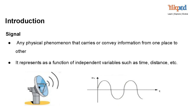A signal is any physical phenomenon that carries or conveys information from one place to another. It can be represented as a function of independent variables such as time, distance, or any other relevant parameter. Signals can take various forms including audio, images, electrical waveforms, or sensor measurements. They play a crucial role in communication, data transmission, and the study of various natural phenomena. The analysis and processing of signals are essential in understanding and extracting useful information from the underlying data.